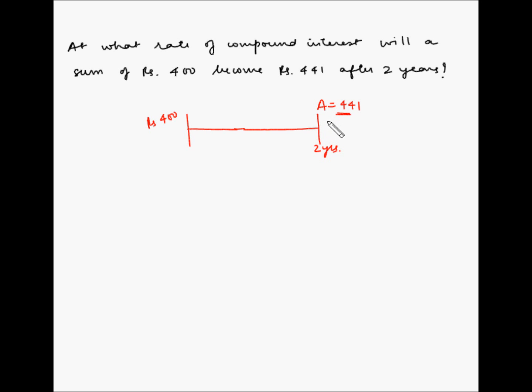Now this amount includes the principal plus the interest gained during these 2 years. So this is the first year and this is the second year. Now we have to find out the rate of compound interest such that the amount of 400 will become 441 in a period of 2 years.